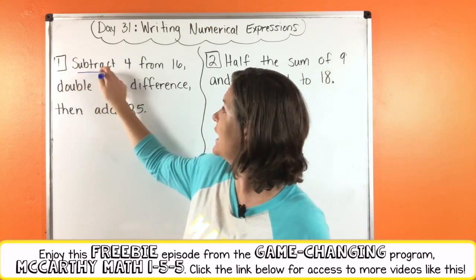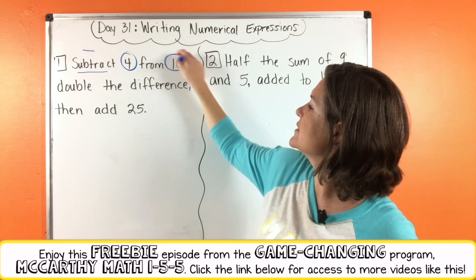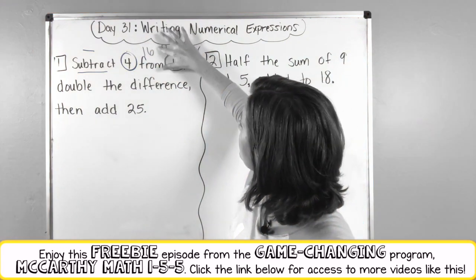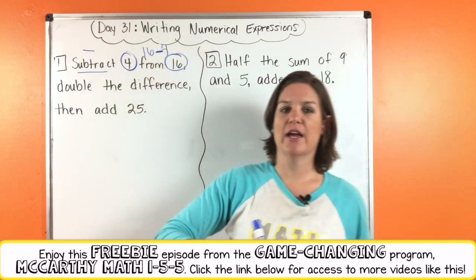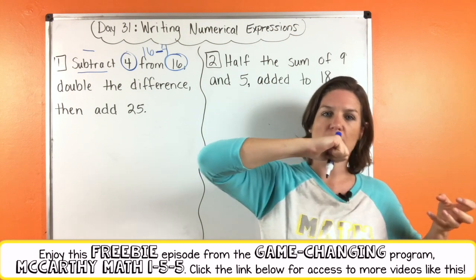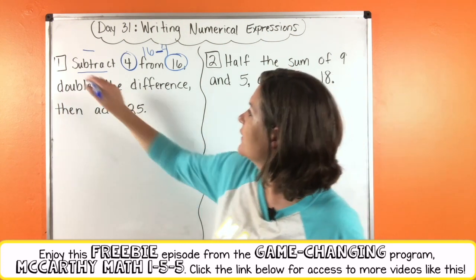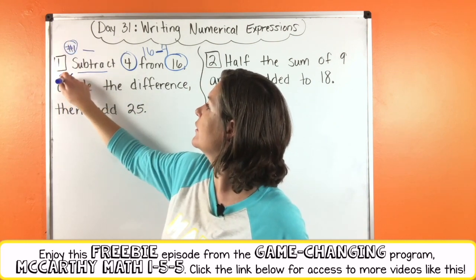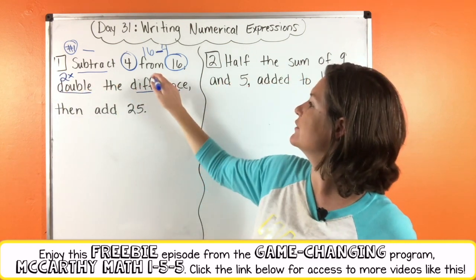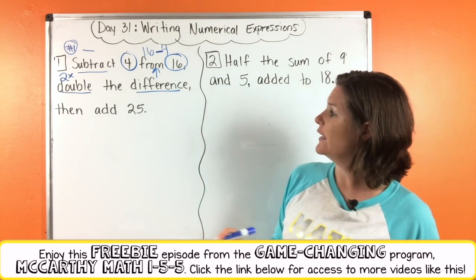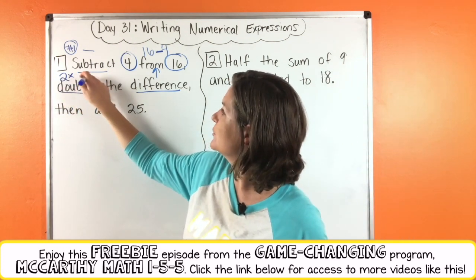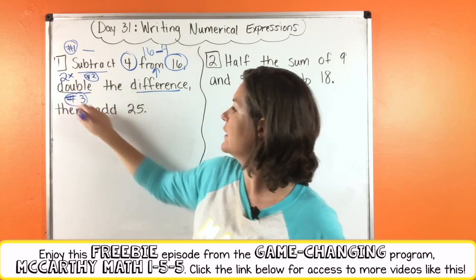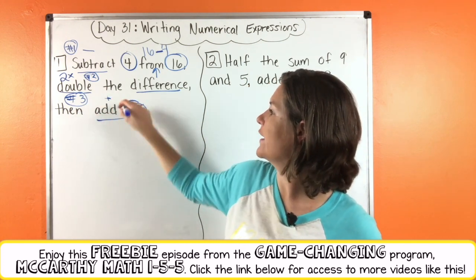It says subtract 4 from 16, which means we're going to do 16 minus 4 — because if you're starting with 16, we're taking 4 from it, so you subtract 4. That's step number 1. Then we are going to double — that means 2 times — the difference. And the difference is what we get from subtracting. That's step number 2, to double the difference. And number 3 is to add 25.